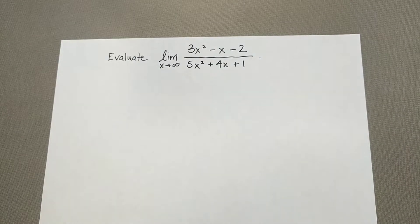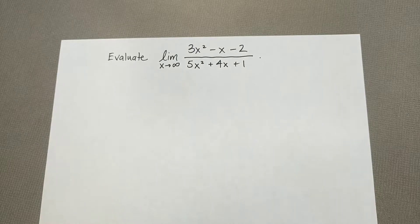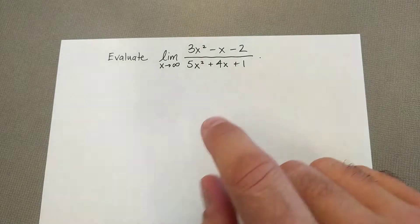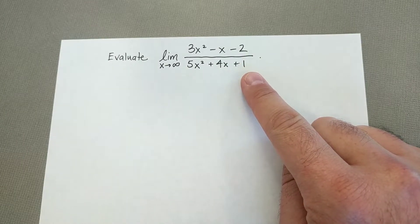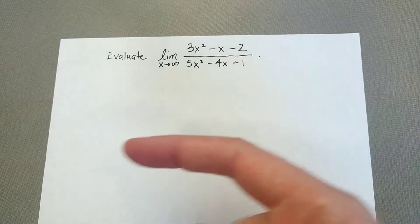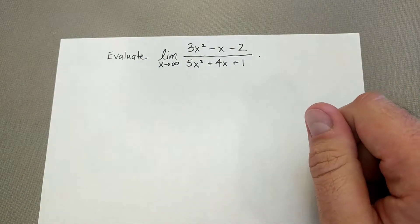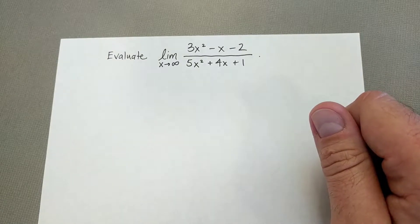So you might already have an intuition about how to deal with this because you might have used this in pre-calculus. The reality is this question is actually asking us, well, where is there a horizontal asymptote if there is one? So as you head off to the right really far, the left really far, is it getting bigger, smaller, or is it approaching a particular value?